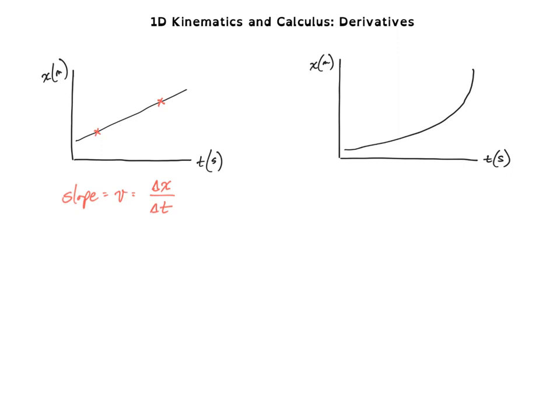But we've already seen situations where we don't have a linear relationship — we don't have a constant velocity or constant acceleration. So if I asked you to find the average velocity on a non-linear graph, you could take two points and find the slope of that line. That line is called a secant line — a straight line joining two points on a given function — and we can very easily find that slope.